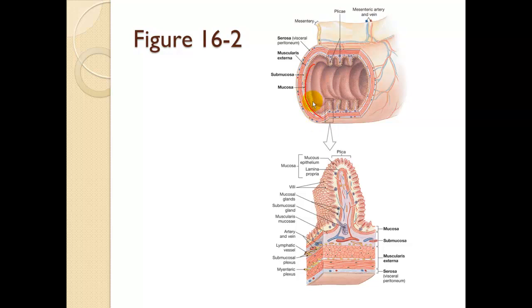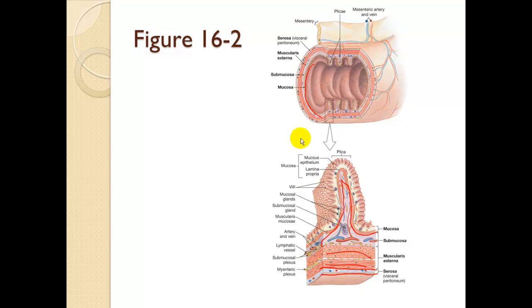The mucosa is the inner lining, and then we have the submucosa — pretty much all of our vascular and lymphatics area. The muscularis externa has two layers of muscle that create wave-like movement in the intestine. On the outside we have the serosa, or visceral peritoneum, which touches the organ on its outer surface. So: mucosa, submucosa, muscularis externa — which is smooth muscle — and serosa.